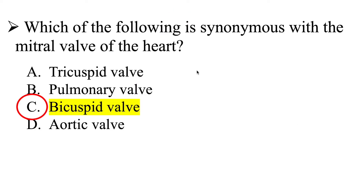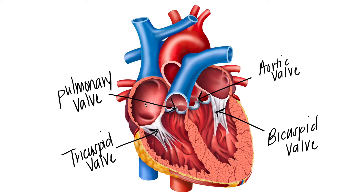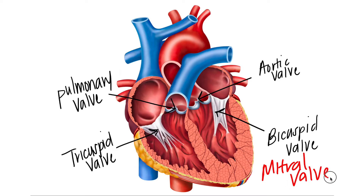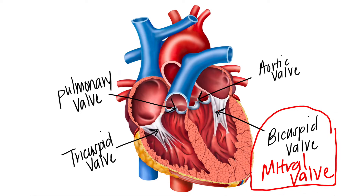If you said C, the bicuspid valve, you are correct. The tricuspid valve is between the right atrium and the right ventricle, and the bicuspid valve is between the left atrium and left ventricle. The bicuspid valve is also known as the mitral valve, so make sure you understand that because on the MBLEX they could use these words interchangeably — referring to it as either the bicuspid valve or the mitral valve.